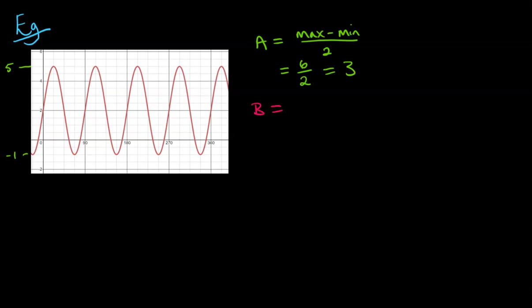Now B is the value that determines our stretch, and for that we need to look at the period of the graph. So our normal sine curve would have done one period in 360. We're in degrees, so we're talking in degrees for the rest of this question. So one of them would have normally been done in 360.